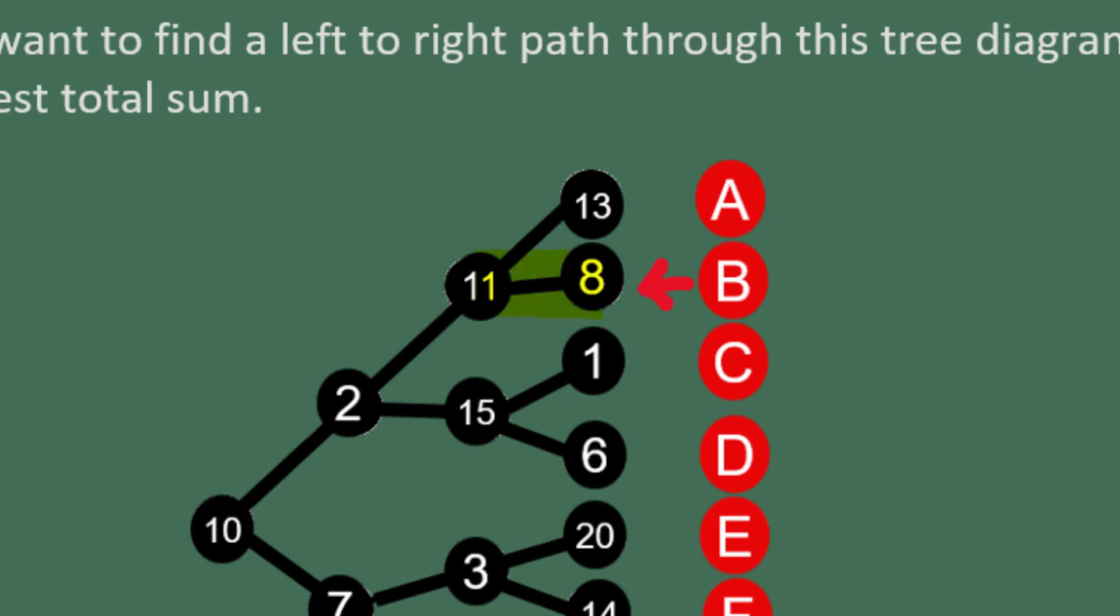The branch that ends at B will include 11, 2, and 10. It's easier to go from right to left because there's only one path to follow in that direction, whereas when you go from left to right, there are many different paths.